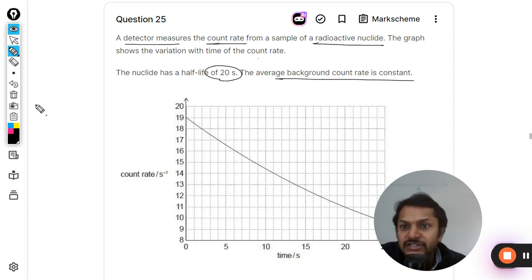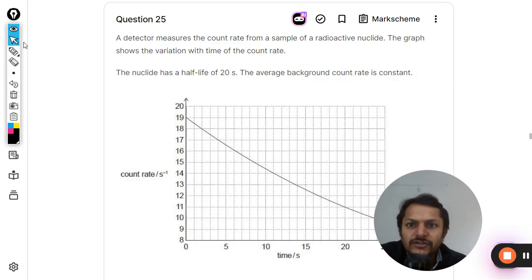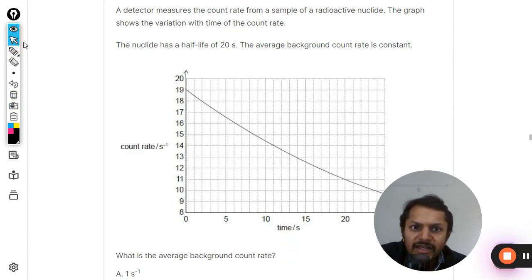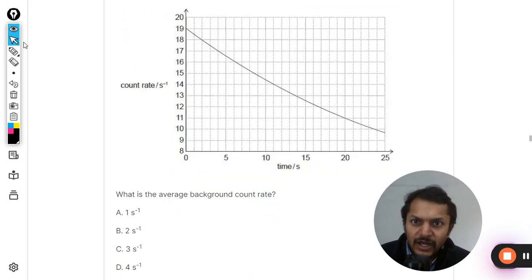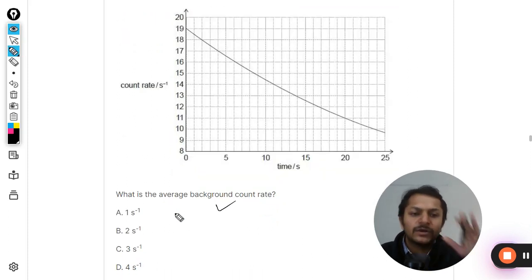The nuclei has a half life of 20 seconds. The average background count rate is constant but it is not given. The graph is given and half life is 20 seconds. What is the average background count rate? This is what we want to find.